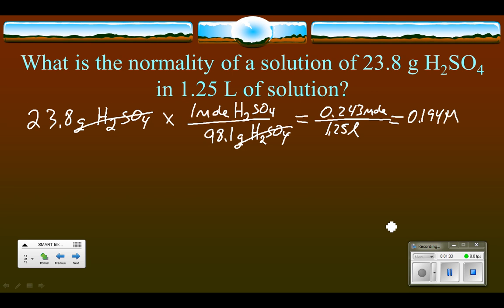Now, to find the normality knowing the molarity, it's simply a matter of looking at the original compound and counting how many hydrogens, and look at it up there, there are two hydrogens.